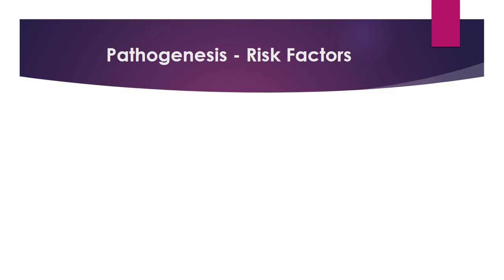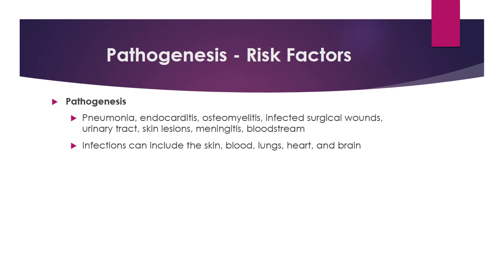The pathogenesis and risk factors of VRSA: VRSA can be found in patients suffering from pneumonia, endocarditis, osteomyelitis, infected surgical wounds, urinary tract infections, skin lesions, meningitis, and bloodstream infections such as septicemia. Infections can also include anything of the skin, blood, lungs, heart, and brain.